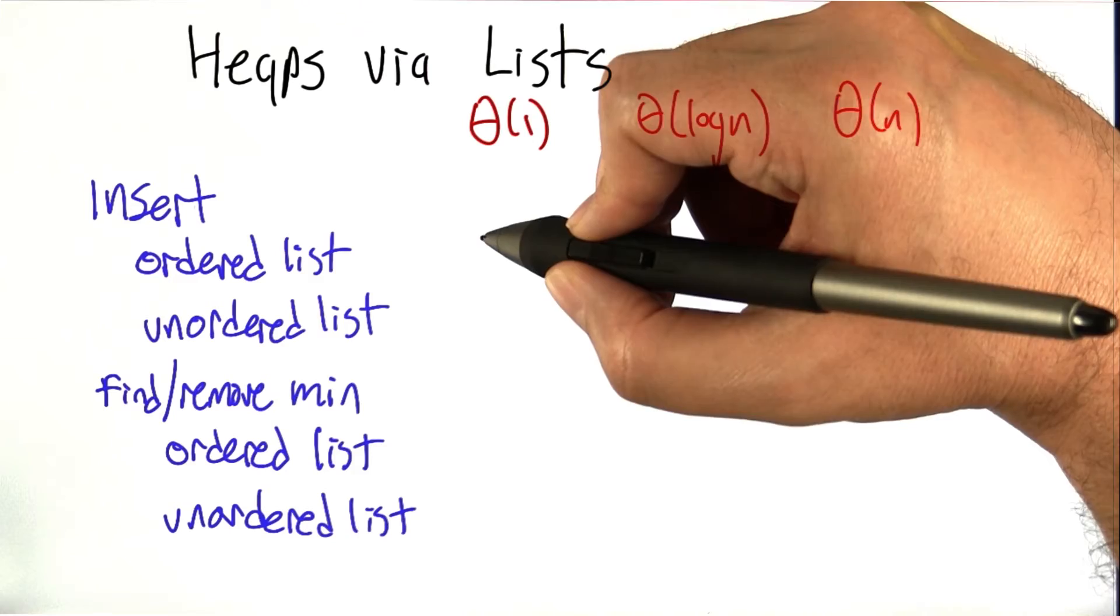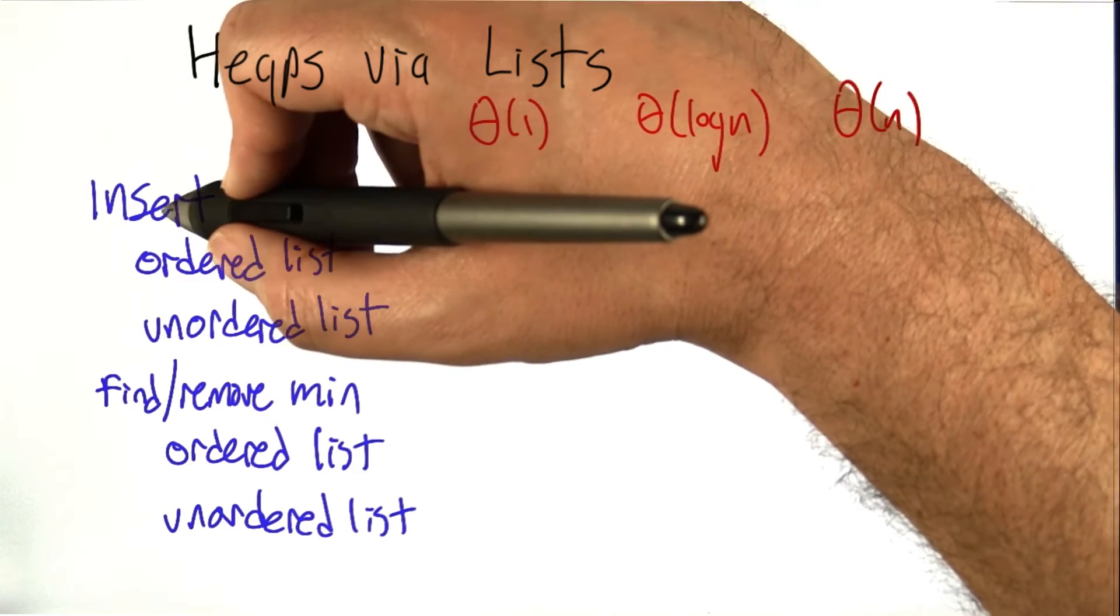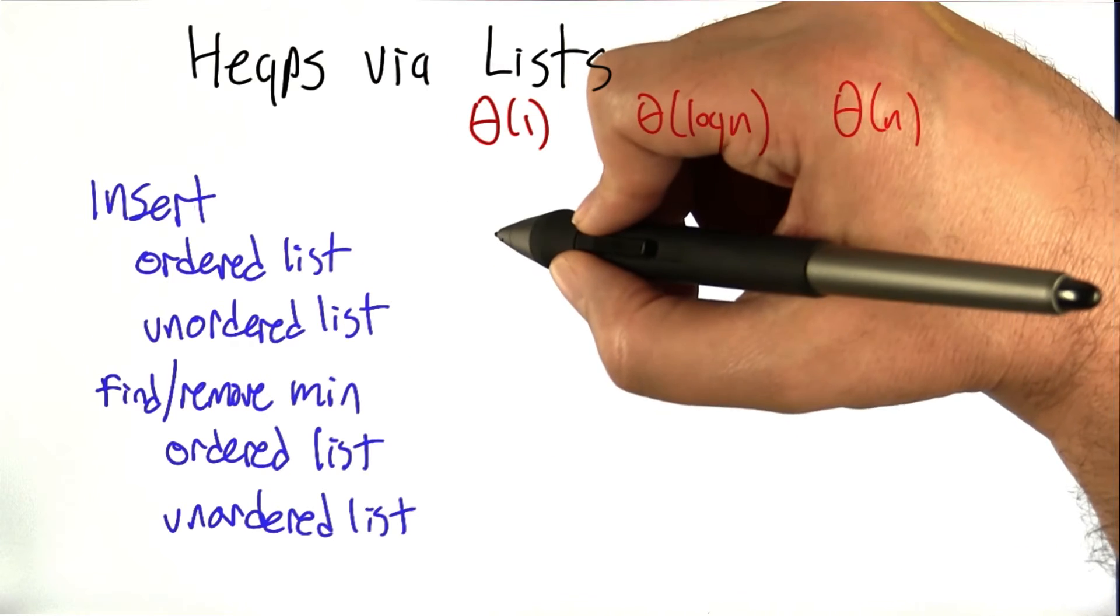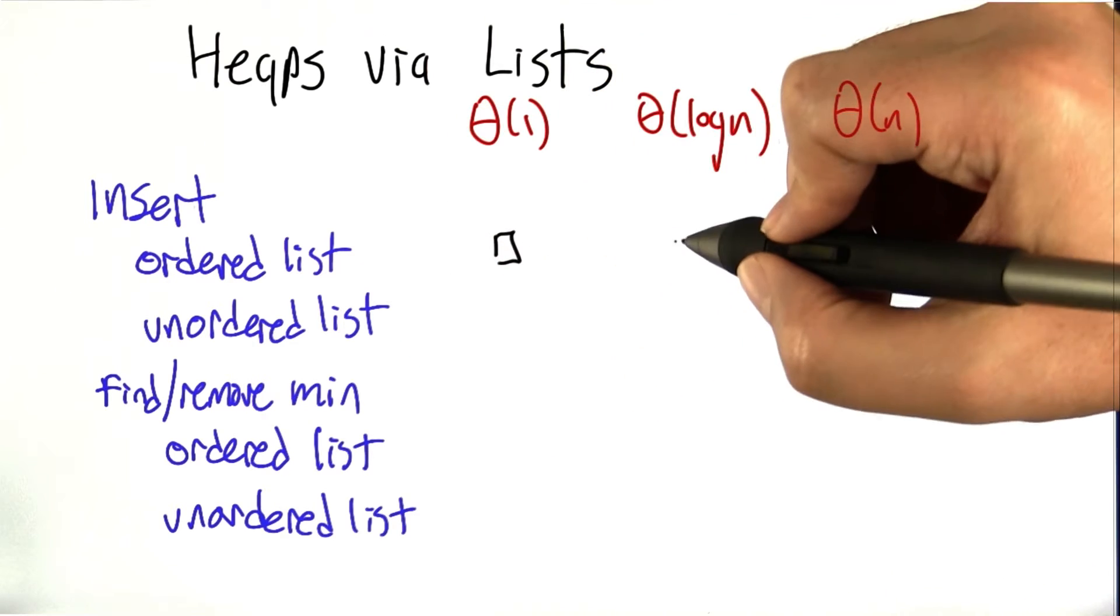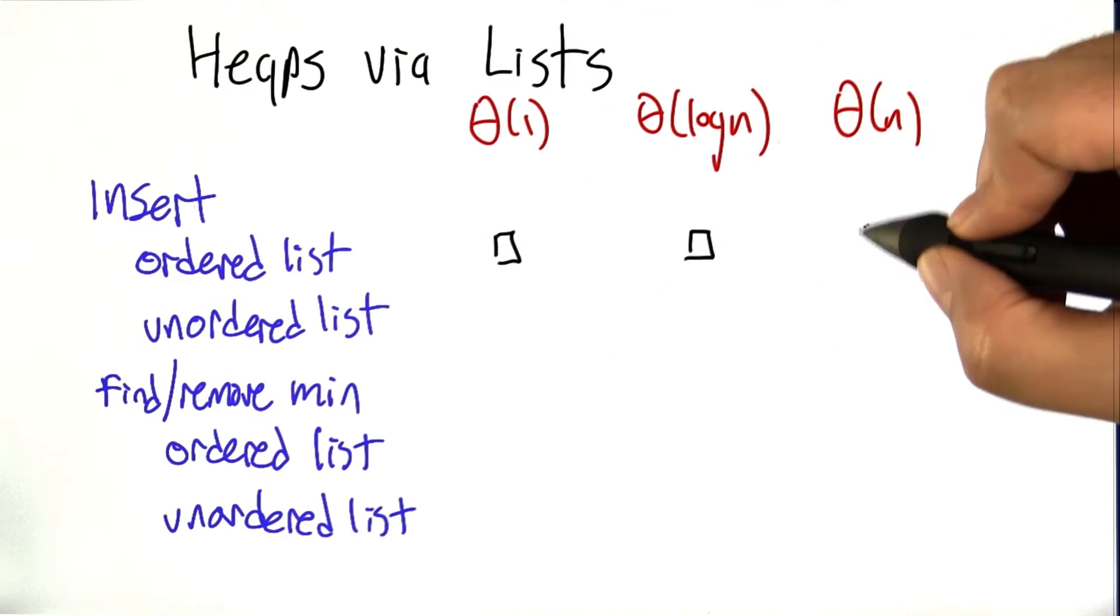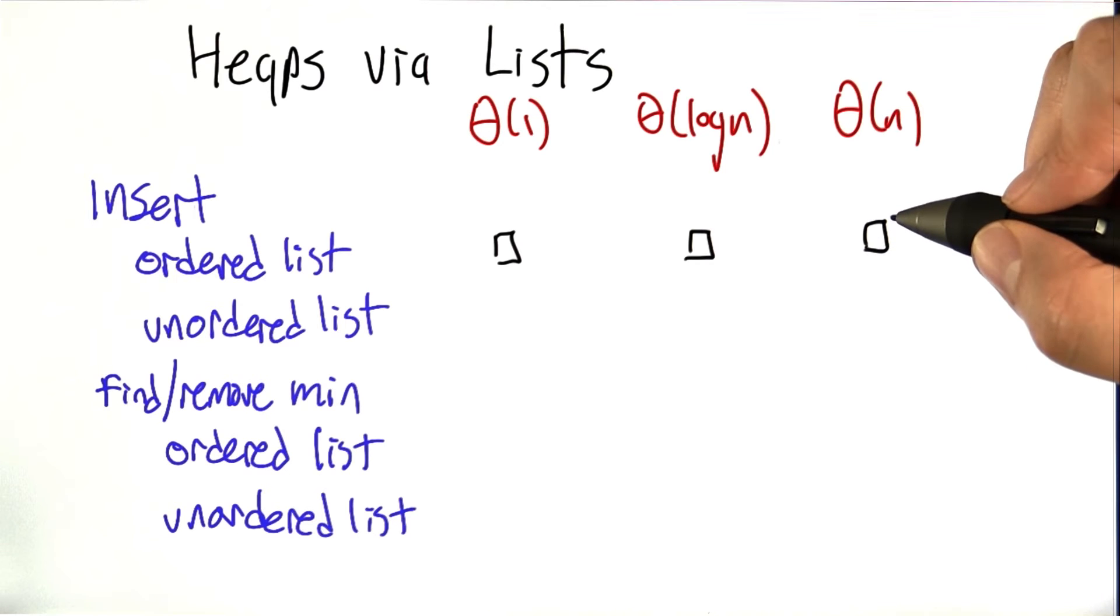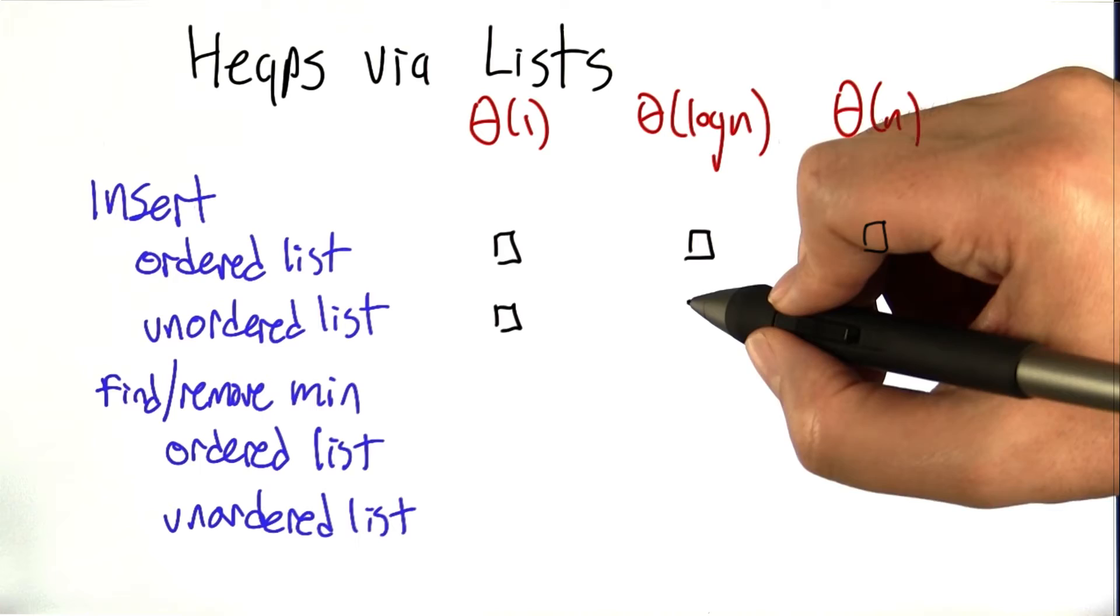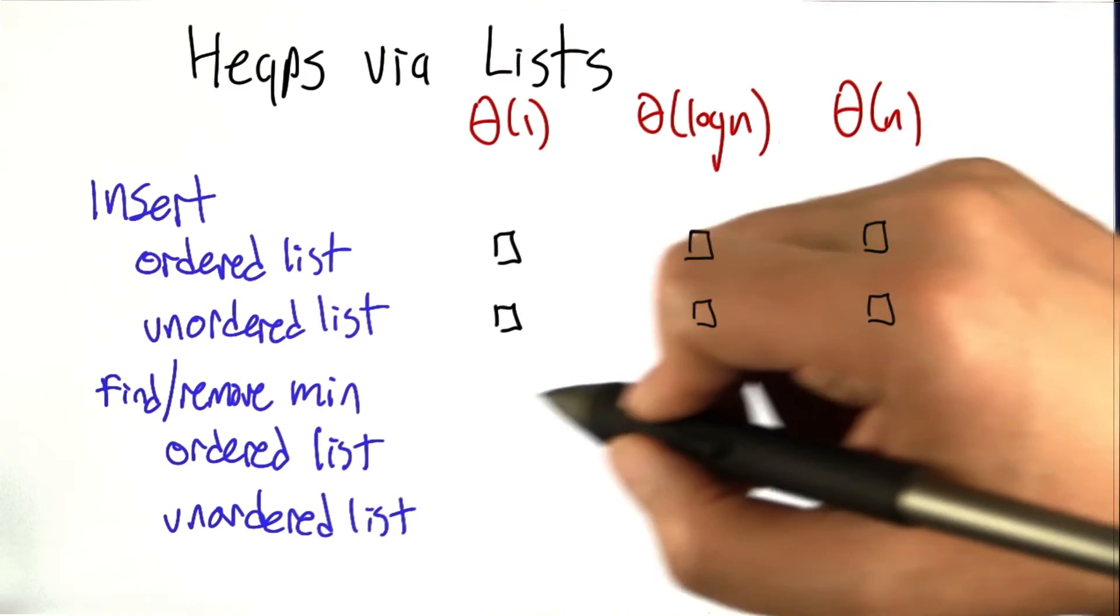What I'd like you to do is, for how long does it take to do an insert into an ordered list of length n? Is that constant time, log time, or linear time? Same thing for an unordered list. How long does it take to stick a new item into the list?